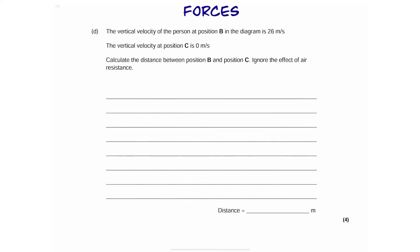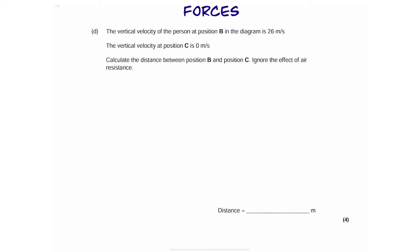Here's another calculation. Again, let's get rid of the lines. So, it says calculate the distance between point B and C. In our picture, we can see that this is point B. The person is moving up at 26 meters per second. By the time they get to point C, they're going to be slowing down. At point C, they have no speed. So, they are moving at 0 meters per second. We want to work out the distance between point B and C.